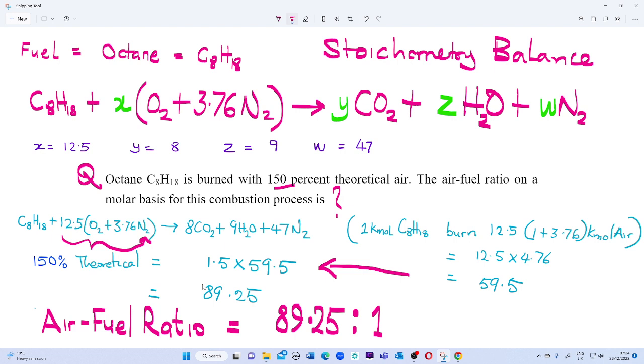Calculate the air-fuel ratio on a molar basis for the combustion process. Now we're given fuel which is octane with the molar formula C₈H₁₈. How do we balance it under stoichiometric conditions? To balance octane under stoichiometric conditions, we know that: